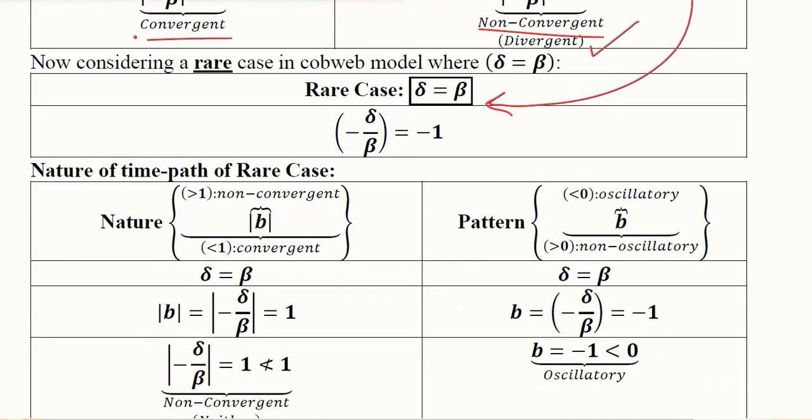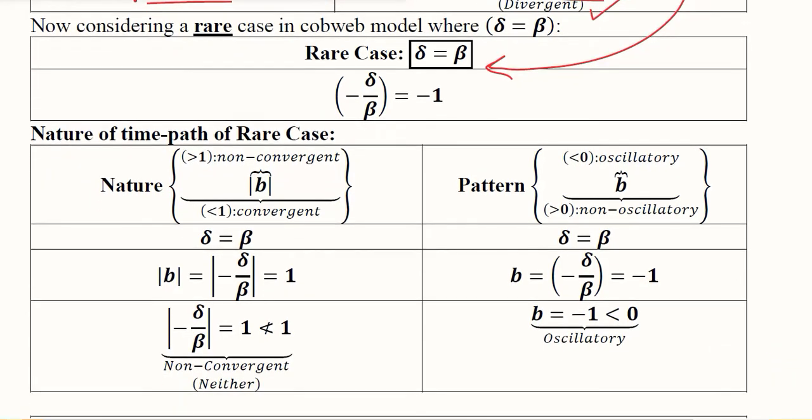Let's try to solve this. This is Delta over Beta, which is the value of small b as per the standard form of the difference equation. In this case it would be equal to minus 1 because we are considering that Delta and Beta are equal to each other, so the ratio would be equal to 1.